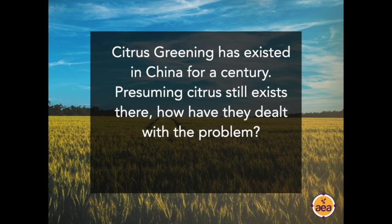Question from Tom Willie: 'Citrus greening has existed in China for a century. Presuming citrus still exists there, how have they dealt with the problem?' I don't know the answer to that question, Tom — that is an interesting question and something that would be worth pursuing. But when you think about historical citrus management, what I'm most familiar with is citrus management in Florida, where they have fairly sandy soils.